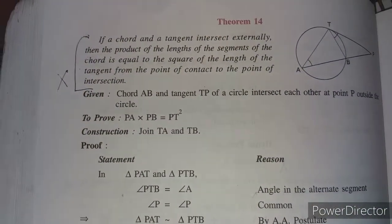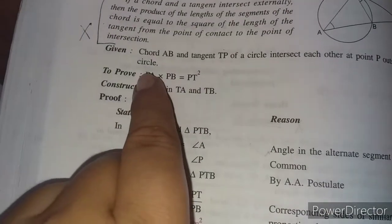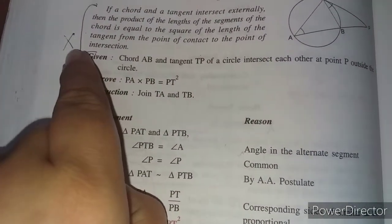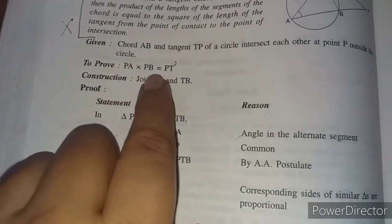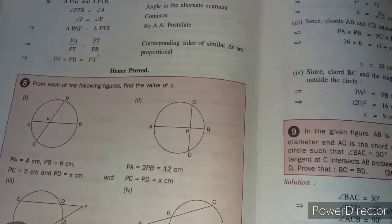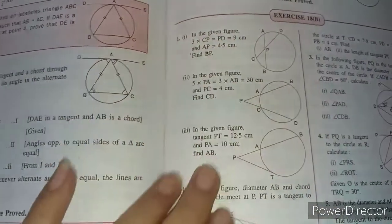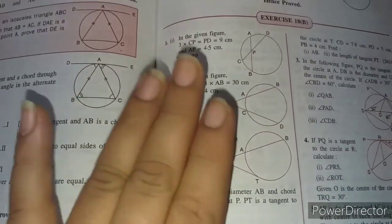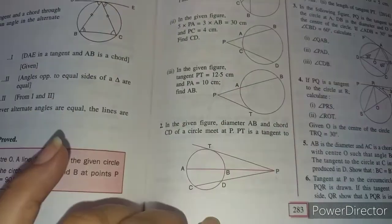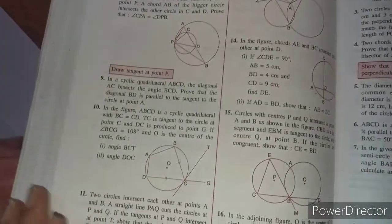Theorem number 14 is excluded: if a chord and a tangent intersect externally, the product of the lengths of the segments — where PA × PB = PT² — is not there in the syllabus at all. Then there are some examples, followed by Exercise 18B. The starting questions of Exercise 18B are based on the excluded property and will not be included, but questions from the Alternate Segment Theorem in this exercise will surely be included.